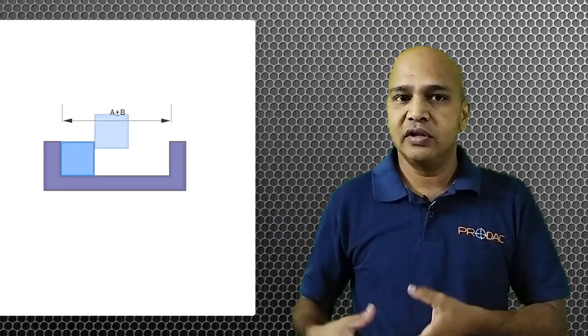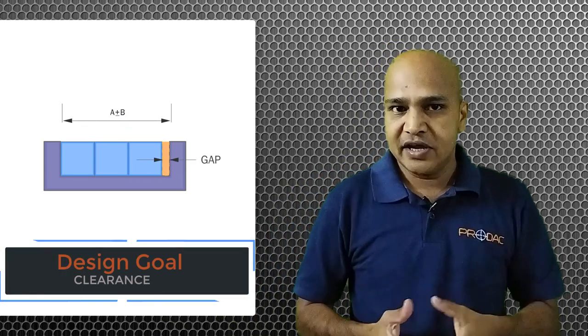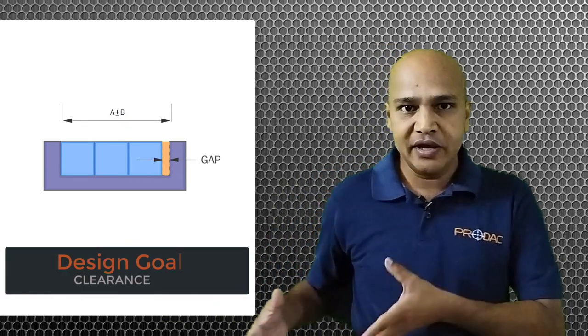Now we will be considering an assembly through which we will understand how RSS tolerance impacts the assembly and the stack-up. You can have a look at the assembly which is shown on my right-hand side, and the design goal of that assembly is to have clearance.